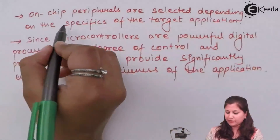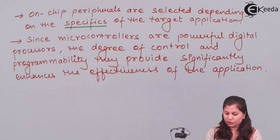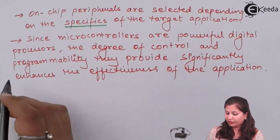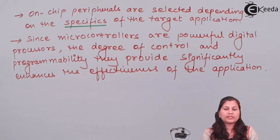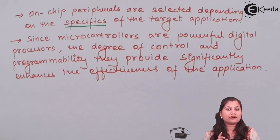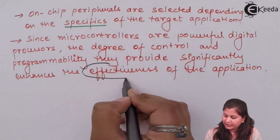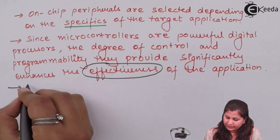On-chip peripherals are selected depending upon the specifications of the target application for which the microcontroller is to be used. As these microcontrollers are powerful digital processors, the degree of control and programmability they provide will significantly enhance the effectiveness of the application. Using a microcontroller in place of a microprocessor increases the efficiency of the application.